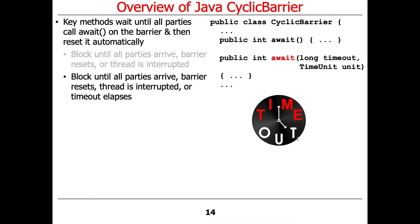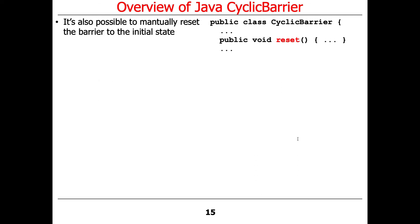There's also an await method that takes a timeout. This method call will block until either all the parties arrive, the barrier is manually reset, the thread is interrupted, or the timeout elapses.